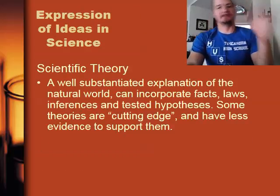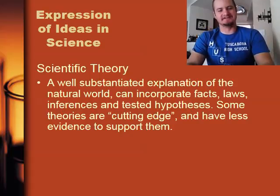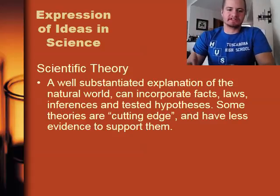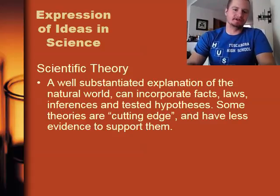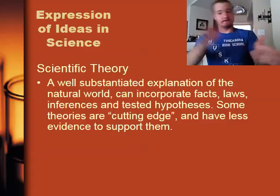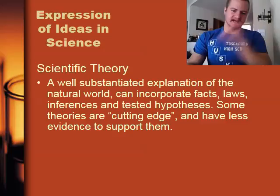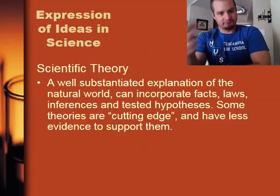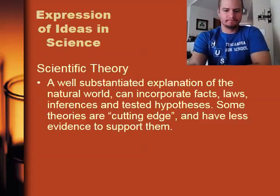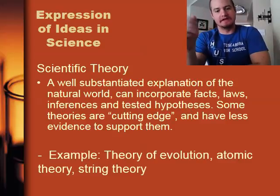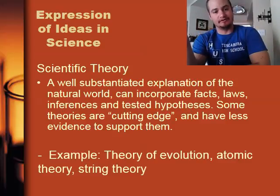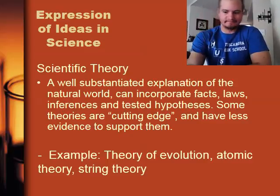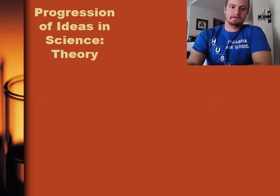A scientific theory. As you can see from the definition here, it's a little bit complicated, but we're going to try and smooth this out. A scientific theory is a well-substantiated explanation of the natural world. It can incorporate facts, laws, inferences, and tested hypotheses. Some theories are cutting-edge and have less evidence to support them because they were come up with not too long ago. Some examples of theories in science include the theory of evolution, the atomic theory, string theory, and just like that TV show, the Big Bang Theory.